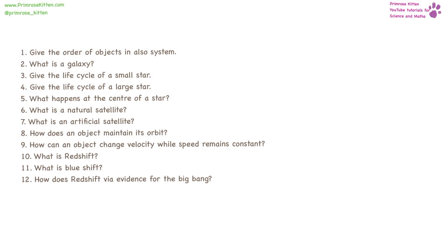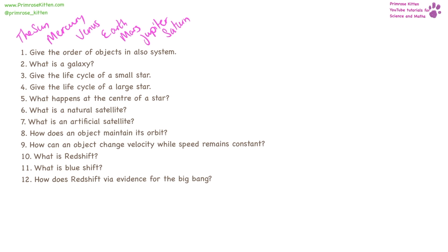Give the order of objects in the solar system. In the middle we have the Sun, then Mercury, Venus, Earth, Mars, Jupiter, Saturn, Uranus, Neptune.